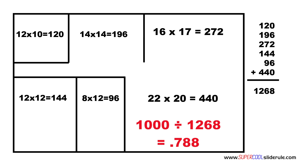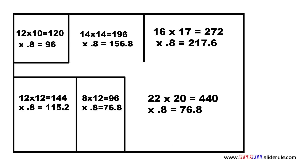We divide this by our total square footage. Our answer is .788. We are going to round this number up to .8. Next, we multiply the square footage of each room by .8. This is our required CFM for each room.